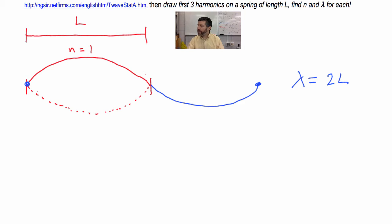What is the wavelength in terms of L? Well, the wavelength of this one, it is equal to two times L is the whole wavelength right there. Okay, let's go on to the next harmonic.